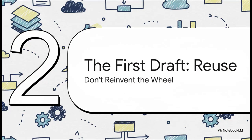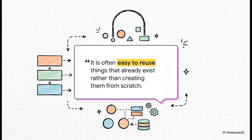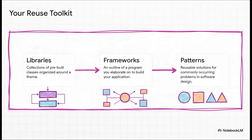So you know what you want to do and how you want to do it — where do you even begin? A smart architect never starts with a completely blank page. The first and smartest step is to see what you can reuse. Why spend months building something from the ground up when brilliant, tested solutions to common problems are already out there? Here's your reuse toolkit: libraries are ready-made parts, like a pre-built engine you can just pop into your car. Frameworks are like the car's whole chassis and body — the basic structure is all there and you just add your custom bits. And patterns are proven engineering tricks, like the best way to design a suspension. Getting good with this toolkit is how you build things fast and build them right.